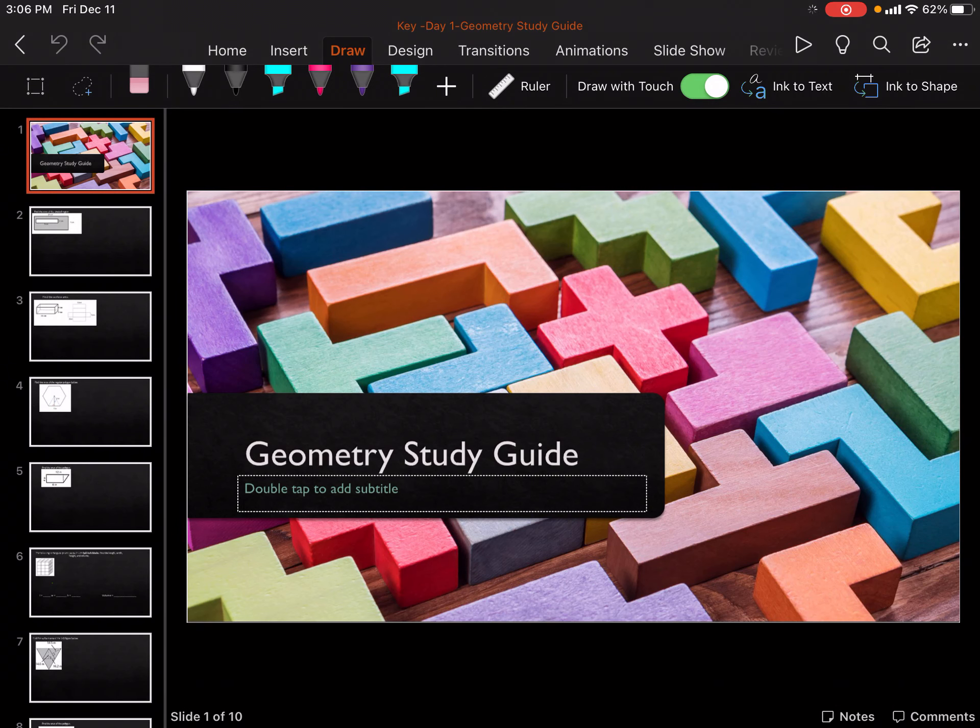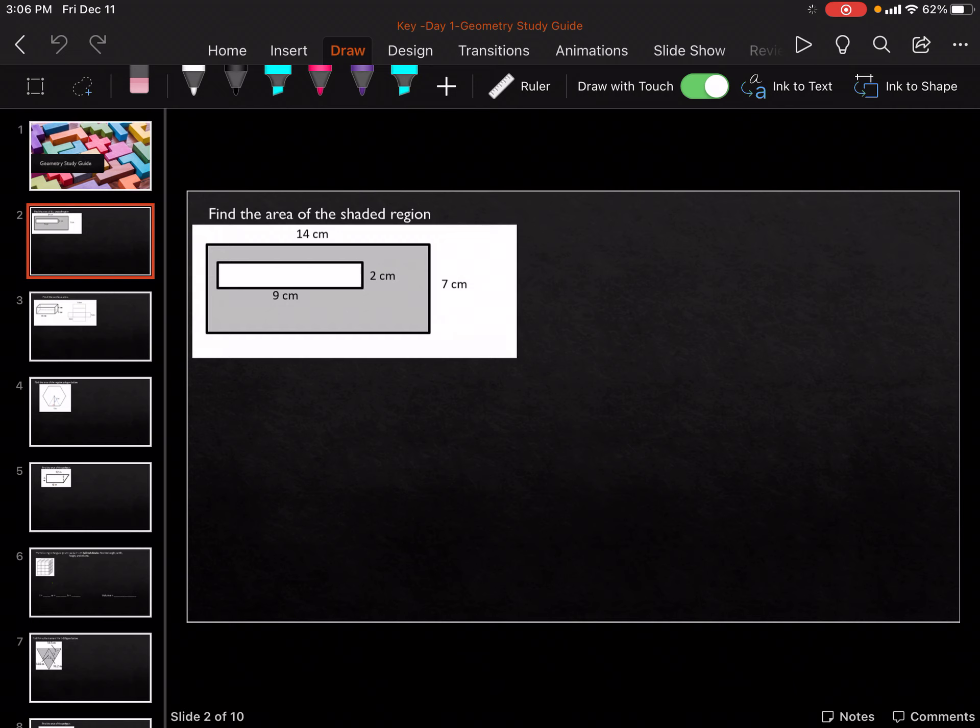Hey guys, in this video we are going to do the Geometry Study Guide Part 1. So for this one we are going to find the shaded region. So we've got A and we've got B as little part inside.